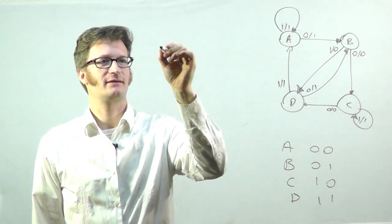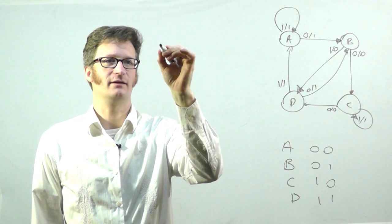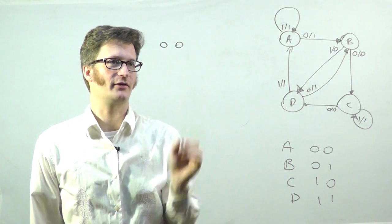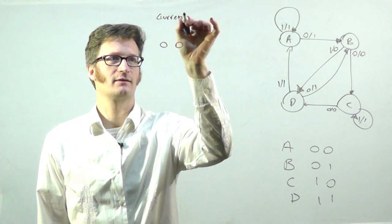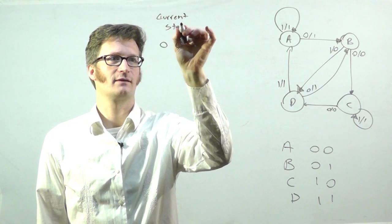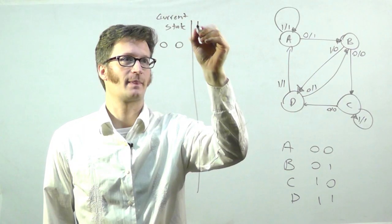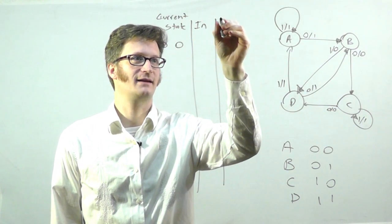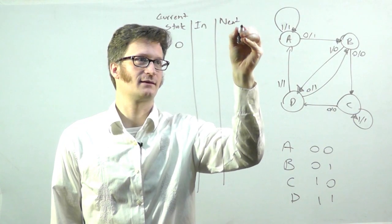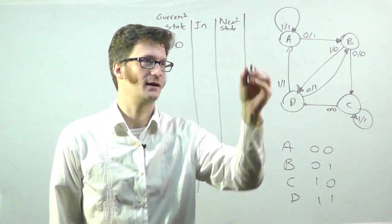All right. So let's take state A. If I have 0, 0, this is our current state. This is my input. Next state. And output.